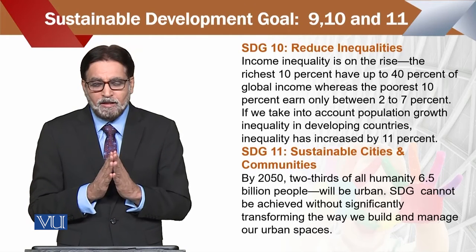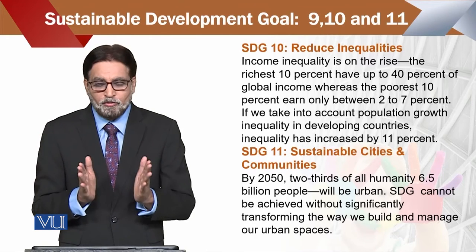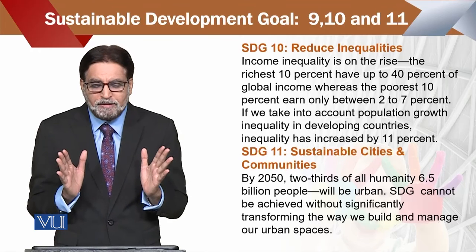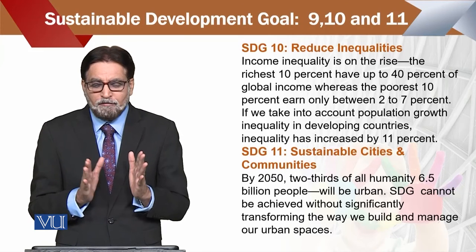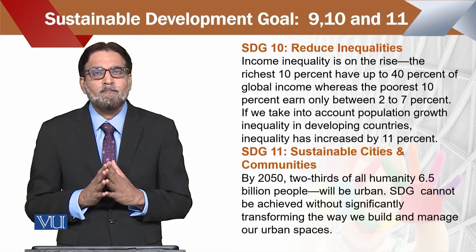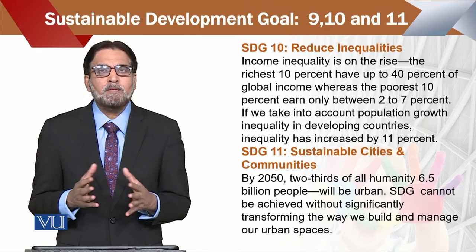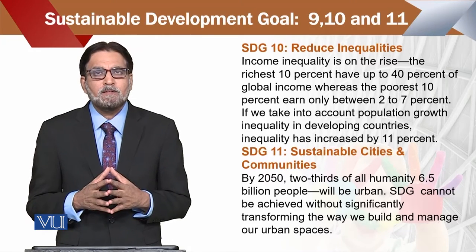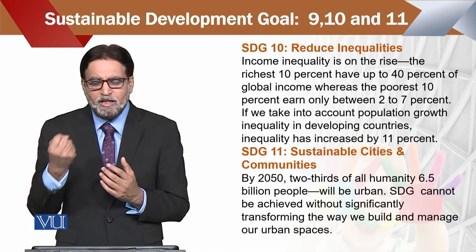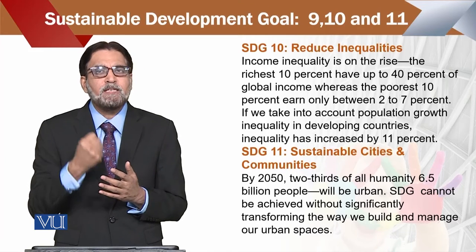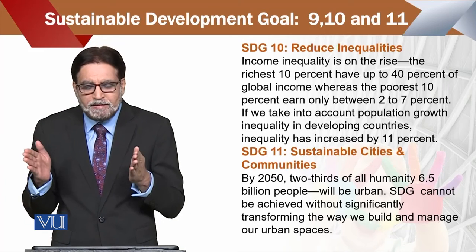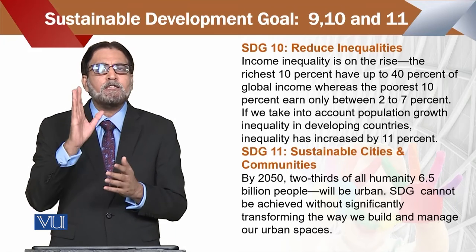Sustainable Development Goal 10 جو تھا وہ inequalities کو reduce کرنا تھا۔ Inequalities کی بات کریں تو the richest 10% have up to 40% of the global income, whereas the poorest 10% have only between 2 to 7% of the wealth distribution۔ جہاں پہ ہم سرمایہ داری نظام کی بات کرتے ہیں تو اس کا ایک drawback یہ ہے کہ دولت دنیا کے چند percent یعنی 10% لوگوں کے پاس سکڑ کے رہ گئی ہے۔